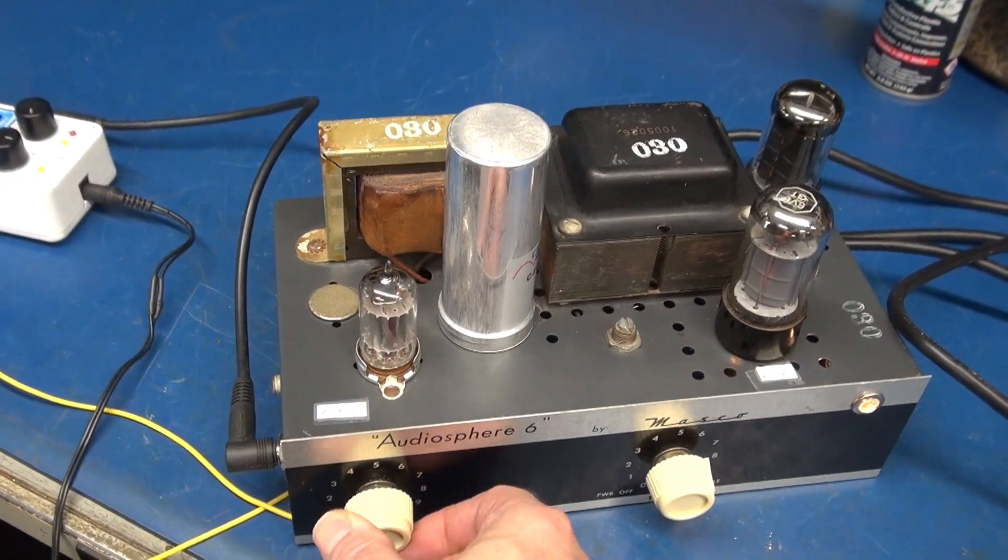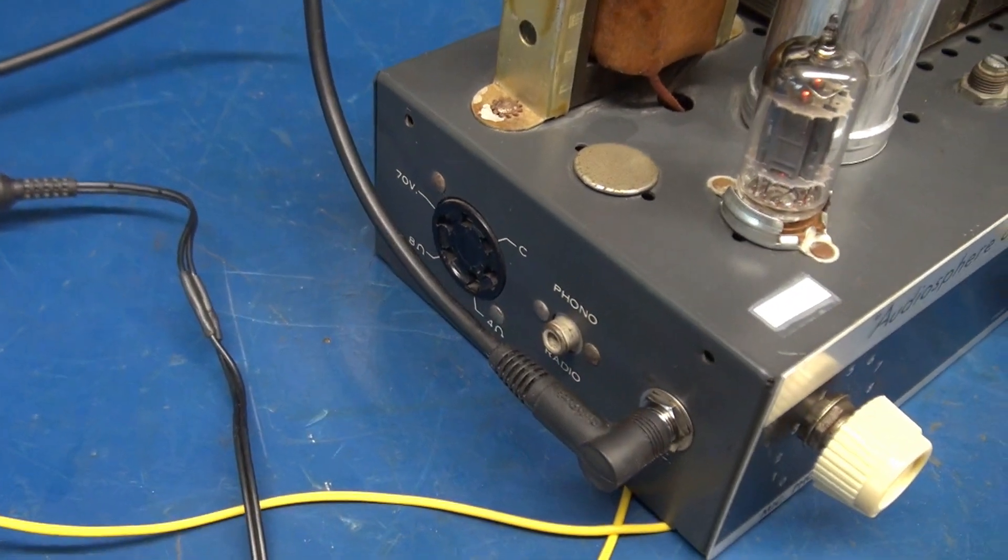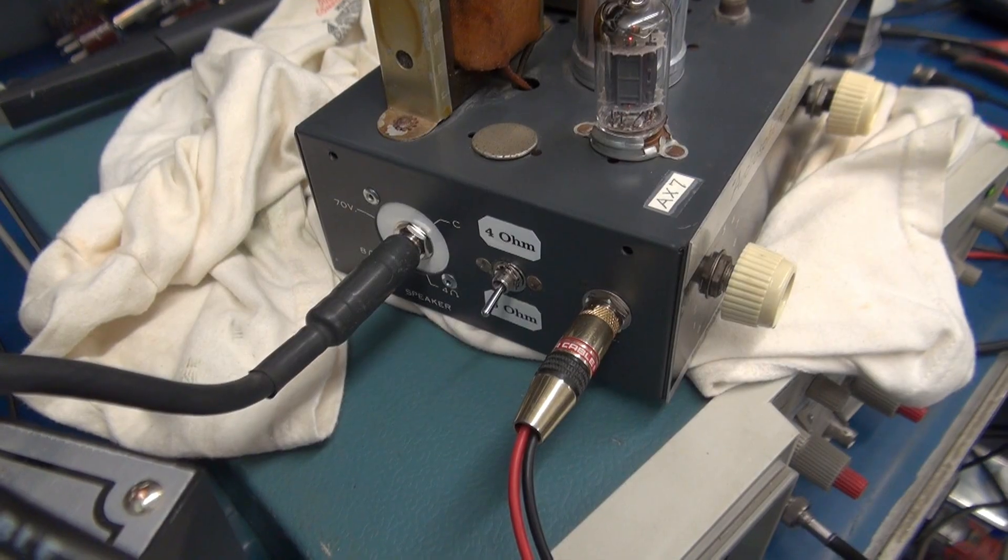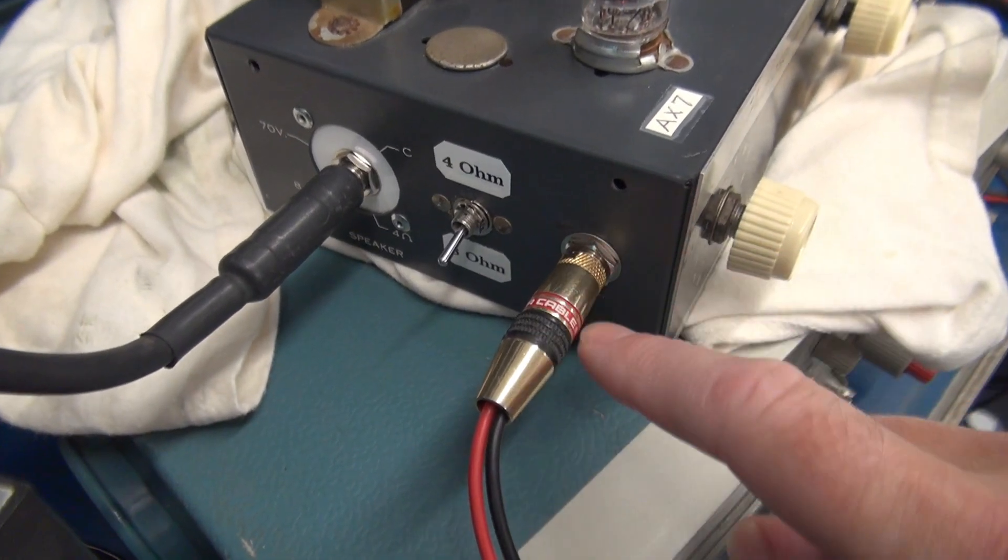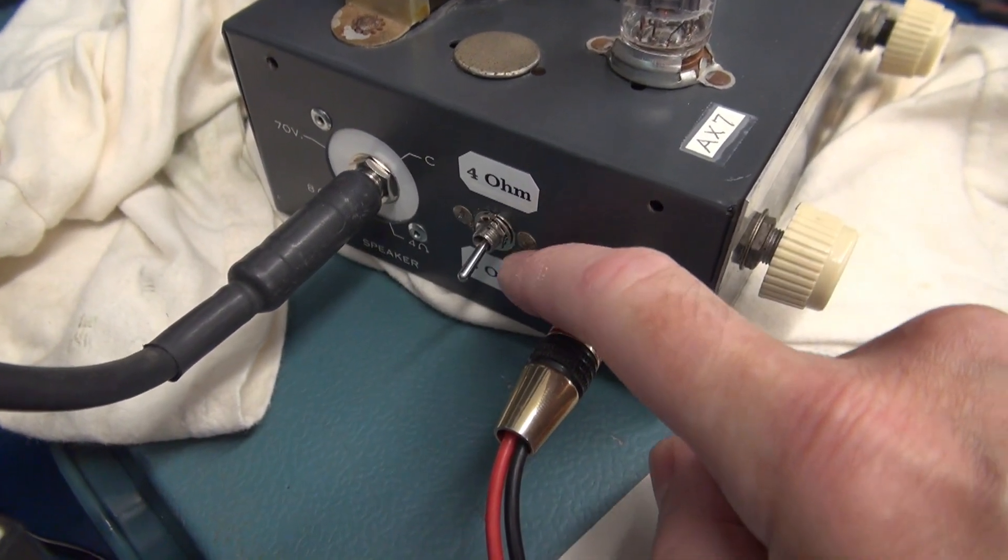She sounds really good. Now I need to put the final touches on it, install the speaker jack, and I'm going to have a switch here to select four or eight ohms. So here's the side of the Masco with all the jacks installed. This is my input, speaker out, and there's a switch for four or eight ohm operation.